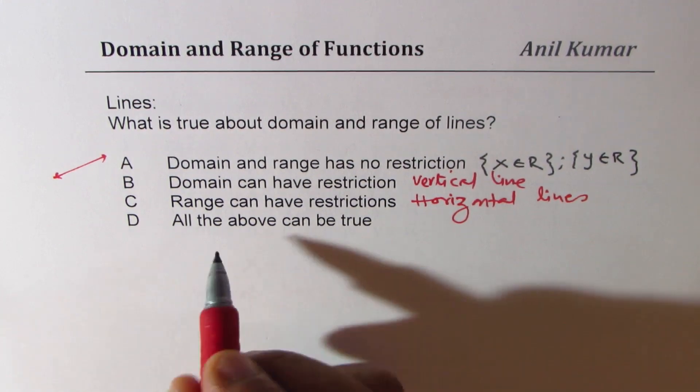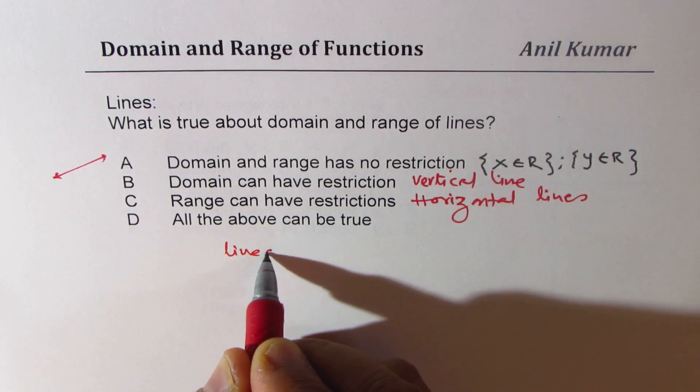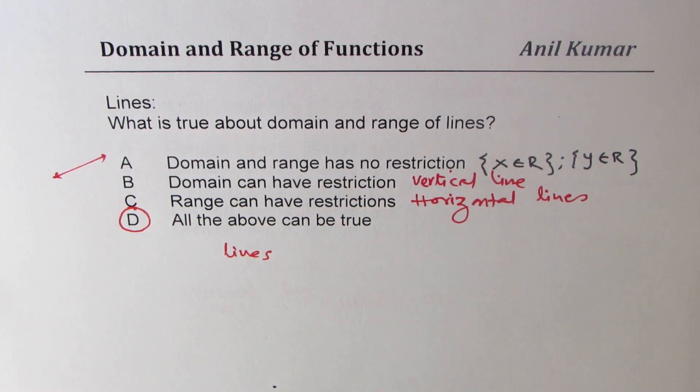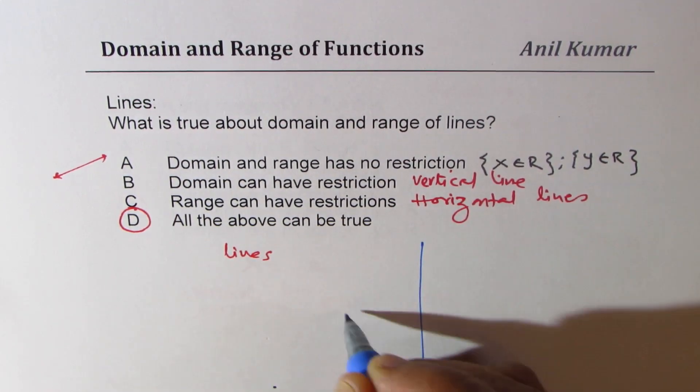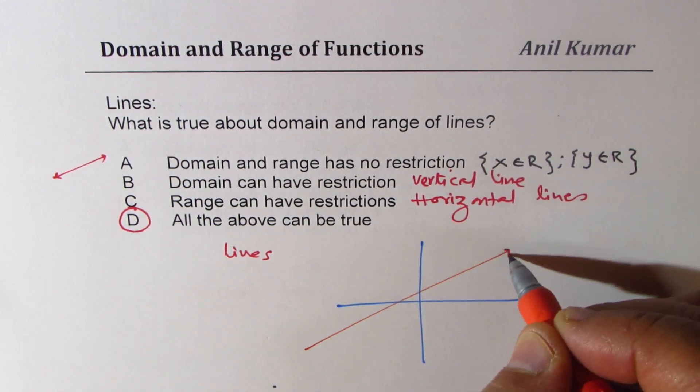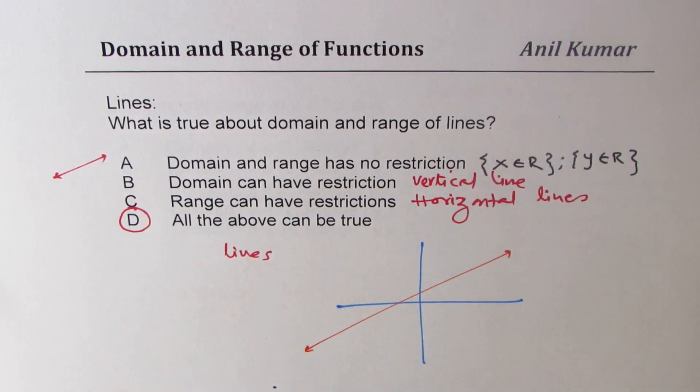All the above is true for lines in general. Do you see that? So option D is the correct option. It really depends on what type of line we are talking about. If it is an increasing or decreasing line, then there's no restriction.